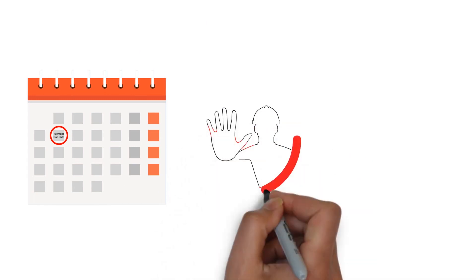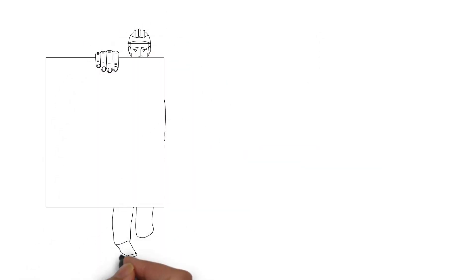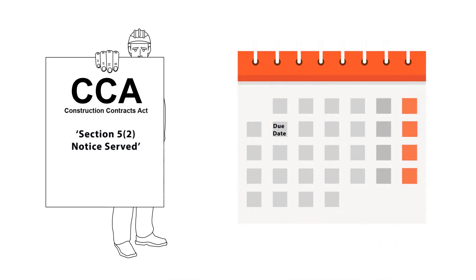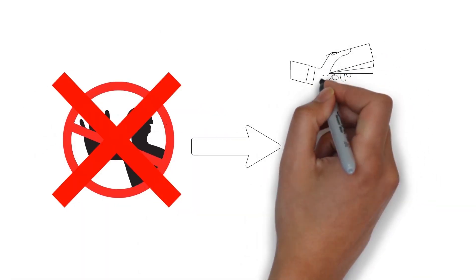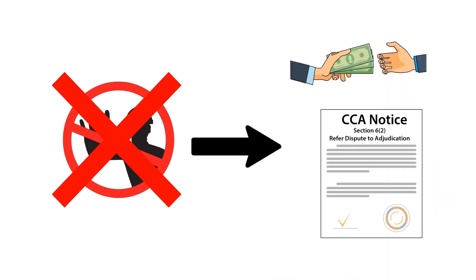Where the amount due under the contract is not paid in full on the due date, the company being paid can suspend the work once they give notice under Section 5.2 of the Act. However, this must be served not earlier than the day after which the amount concerned is due, and at least seven days before the suspension is intended to begin. Work cannot be suspended if the other party pays or notice has been served by either party under Section 6.2 of the Act to refer the dispute to adjudication.